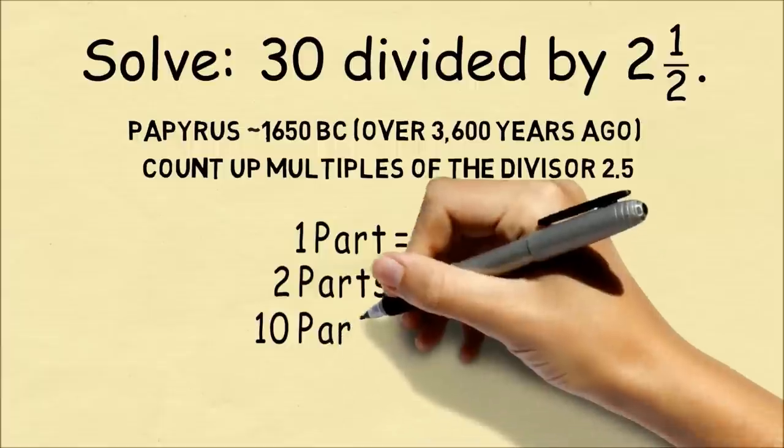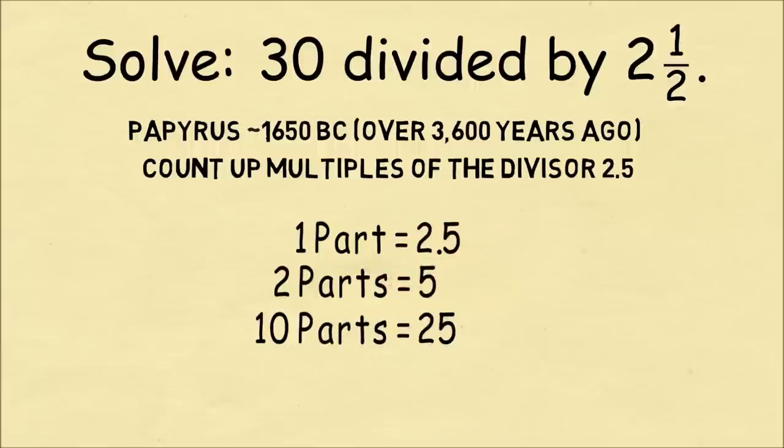And then we can also take 10 parts of 2 and a half to get 25. And now we've pretty much solved the problem. We can add up 5 and 25 to get 30. So we're adding up to 30, which is because we're doing 30 divided by 2 and a half.